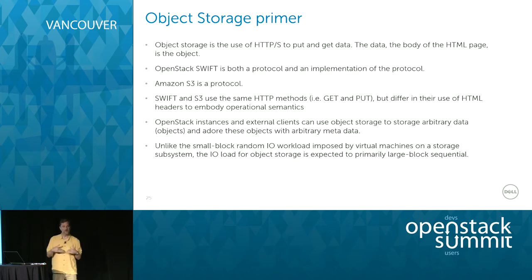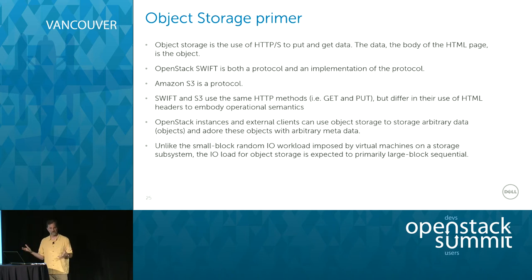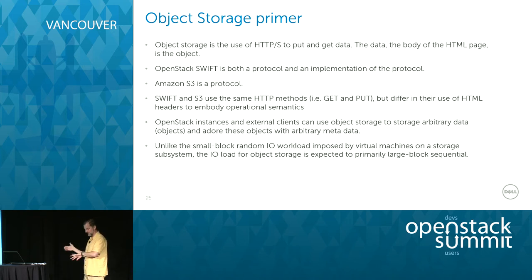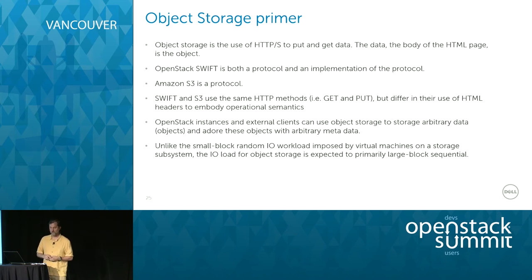The interesting part about object storage is that the real value is when the client writes data and files and you can modify those files with metadata — that's where you get the real power, using object storage instead of a file system. One relevant point is that object storage systems expect sequential I/O, which is generally a different type of server than random I/O. For block servers, you expect small block random I/O — even if all VMs write sequentially, it works out to random I/O. But for object storage, you'd expect all sequential I/O.